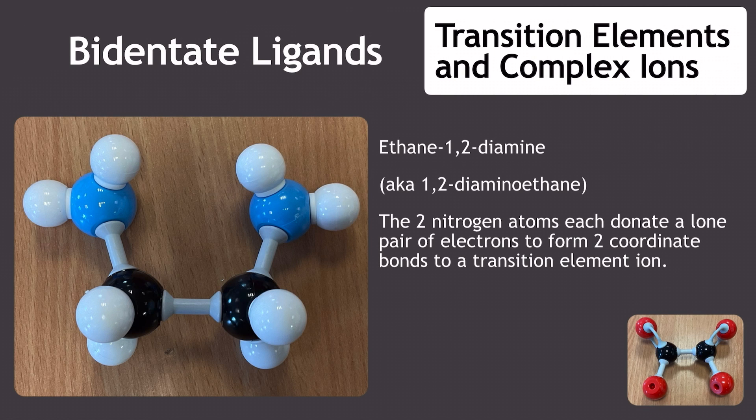As alternatives to monodentate ligands, we can actually have something called a bidentate ligand. Now, a bidentate ligand has got a slightly expanded definition. Here, we have a molecule or molecular ion, which is going to donate two lone pairs of electrons to form two coordinate bonds per molecule to a transition element ion.